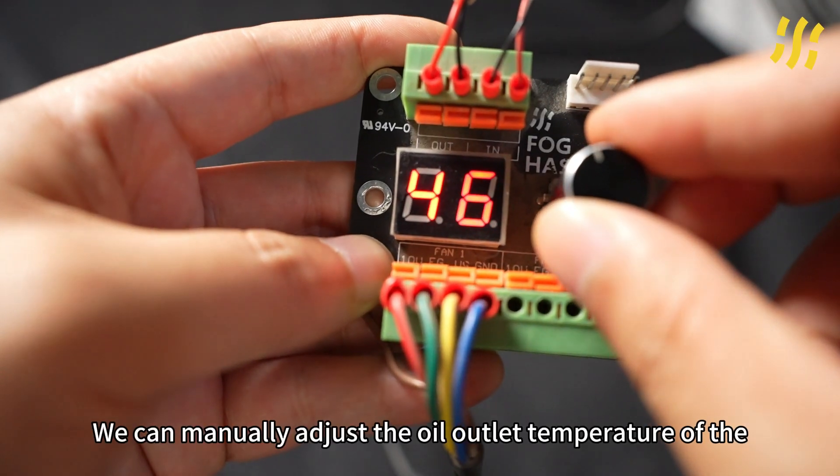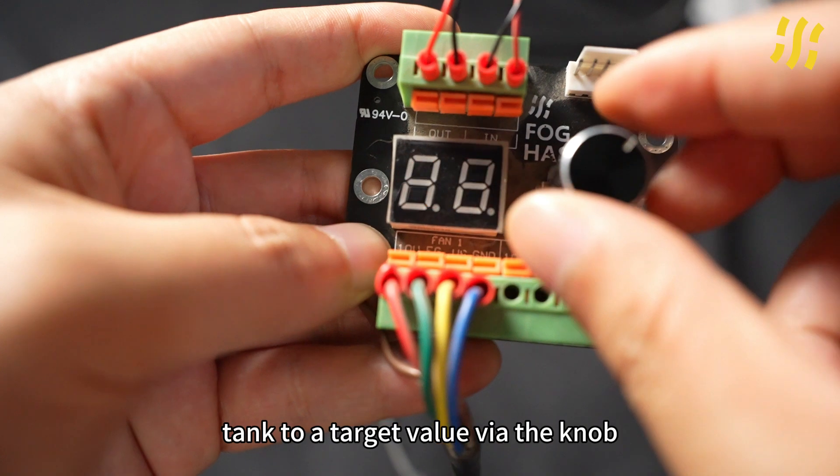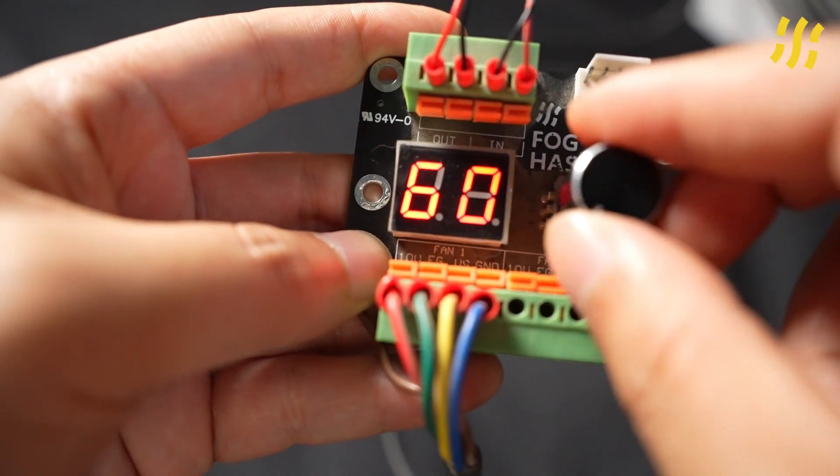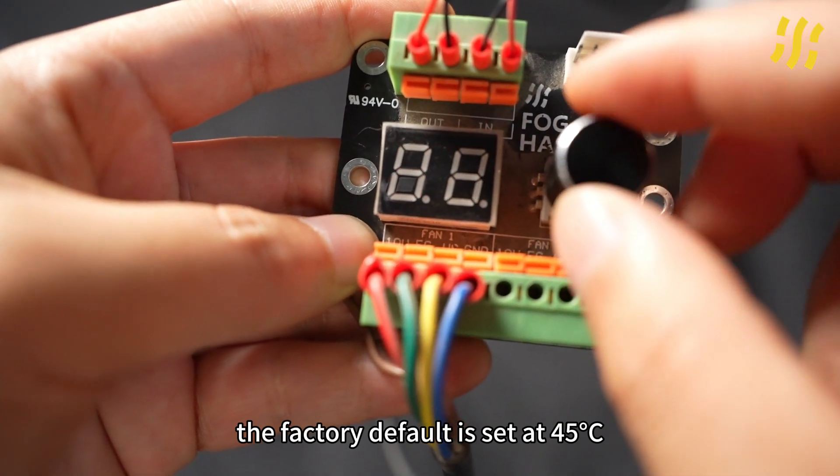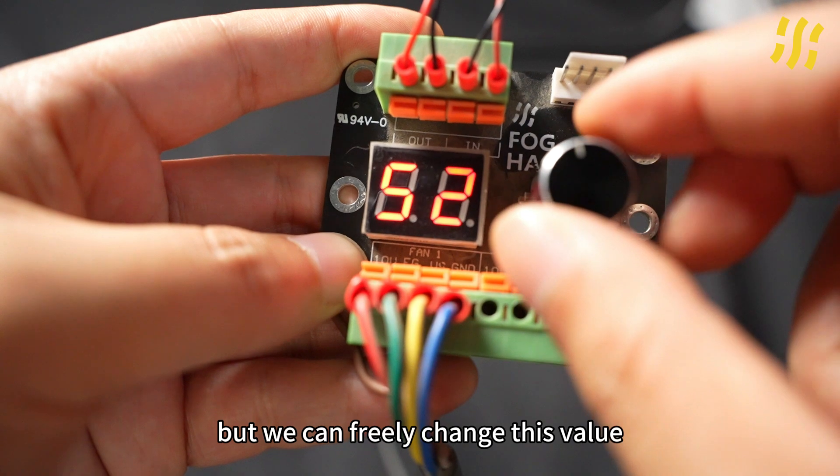We can manually adjust the oil outlet temperature of the tank to a target value via the knob. Typically, the factory default is set at 45 degrees Celsius, but we can freely change this value.